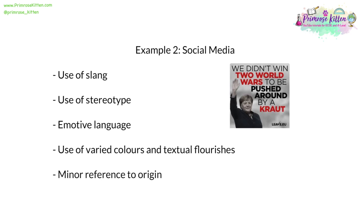A second example is social media. We see here a picture of Angela Merkel, the leader of Germany, with the caption: 'We didn't win two world wars to be pushed around by a kraut.' Kraut is a slang term for someone who is German — it's a term of racial abuse. This uses slang, stereotypes, and emotive language such as 'pushed around.' It uses varied colours and textual flourishes, especially red, often associated with anger, and there's only a very small reference to who actually wrote the graphic. This is a classic example of using a meme to appeal to people's phobia and racism — a typical example of bias on social media.